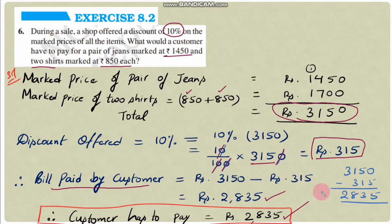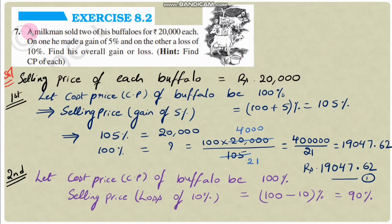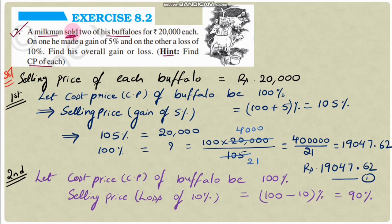So the customer has to pay rupees 2835. Question number 7: A milkman sold 2 of his buffaloes for 20,000 rupees each. On one he made a gain of 5% and on the other a loss of 10%. Find his overall gain or loss. Note: 20,000 rupees each is the selling price.